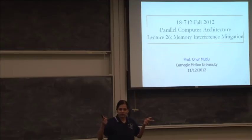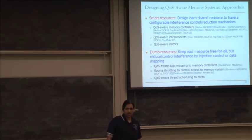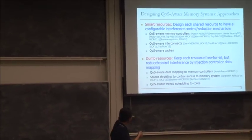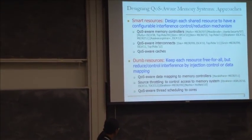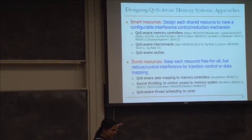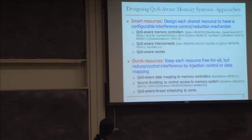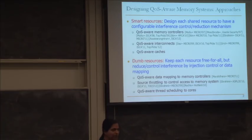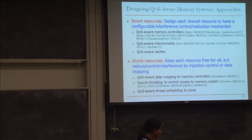This outline is probably familiar to you by now because Onur has been covering the quality of service memory controllers part extensively. There have also been lectures on interconnects and cache management. Today I'm going to be talking about the second part of this slide — dumb resources — where you keep each resource free-for-all in the sense that you don't equip each resource with its own intelligence, but instead manage interference at a different level by mapping data appropriately.